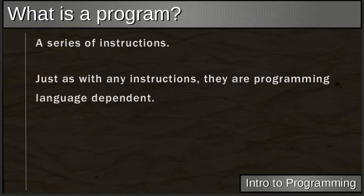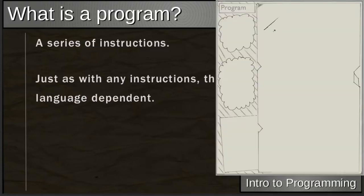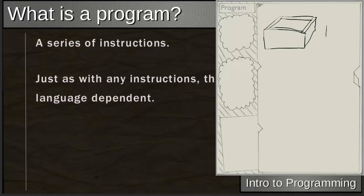A program is a series of instructions. Just like giving someone instructions on how to build a house — first you lay the foundation, pour the concrete, then you do framing, then drywall, then painting — you're building from the ground up. You give them specific, exact instructions in an order of operations: first foundation, second framing, and so on.